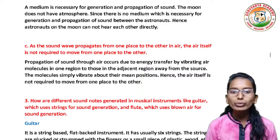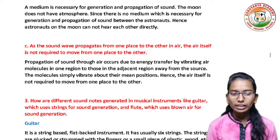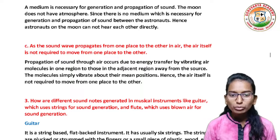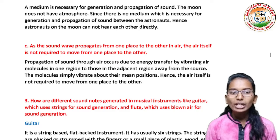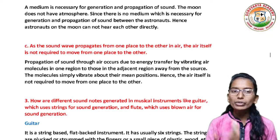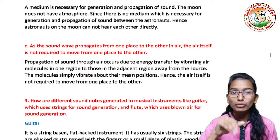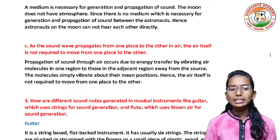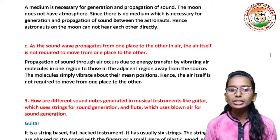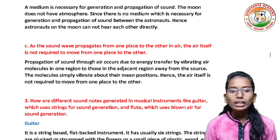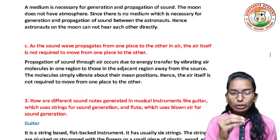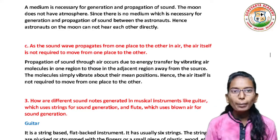As the sound wave propagates from one point to another in the air, the air itself is not required to move from one point to the other. The propagation of sound through air occurs due to energy transfer by vibrating air molecules in one region to those in the adjacent region away from the source. The propagation of sound is not due to the movement of air molecules themselves, but rather vibrating molecules transfer energy to adjacent air molecules.